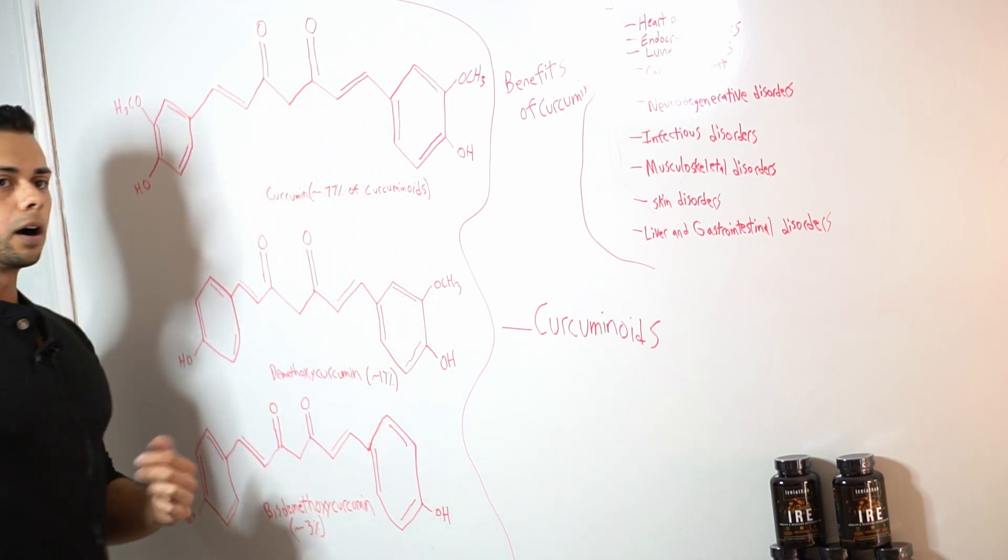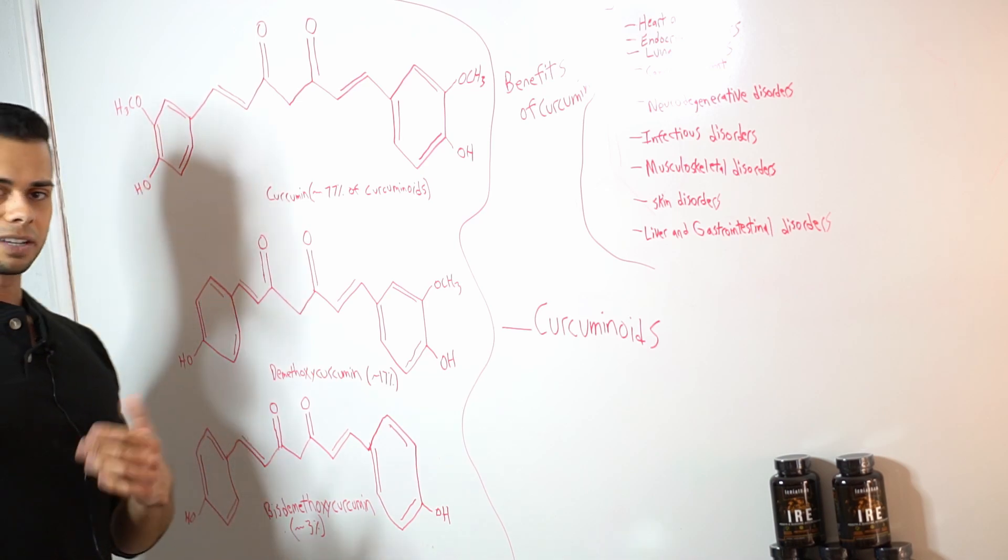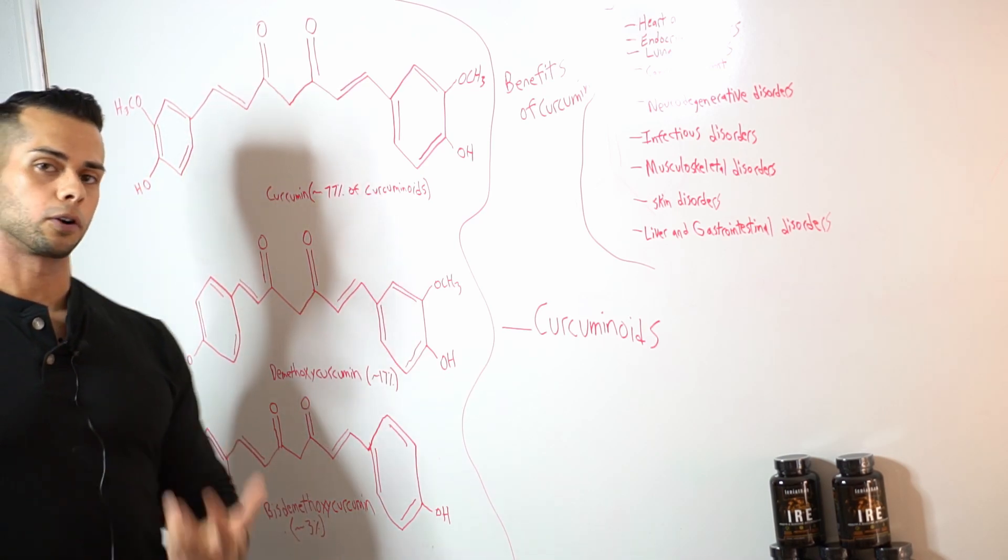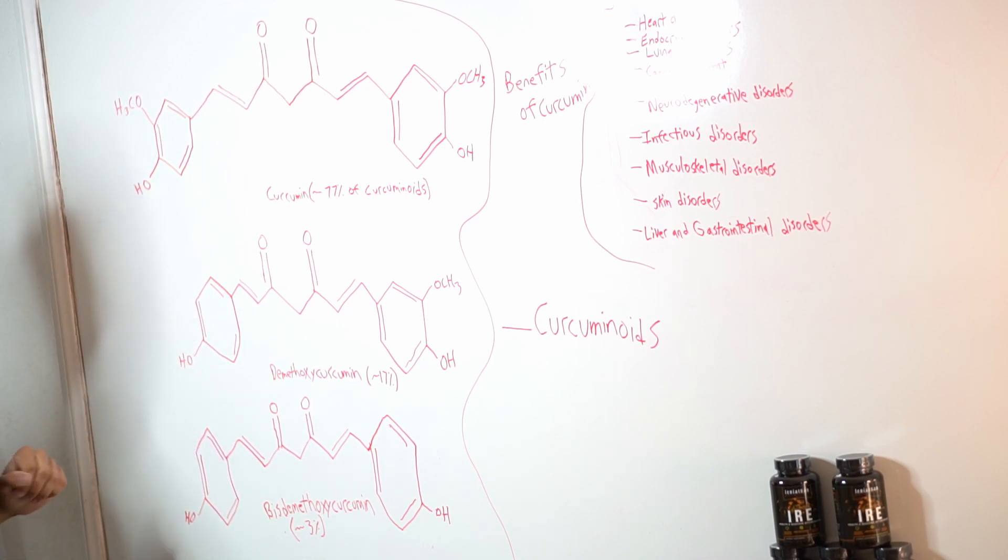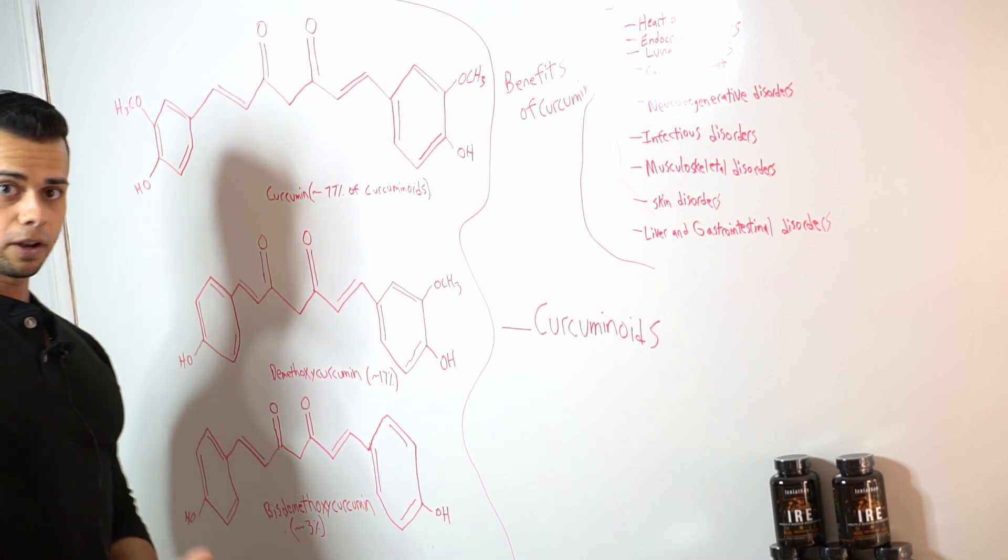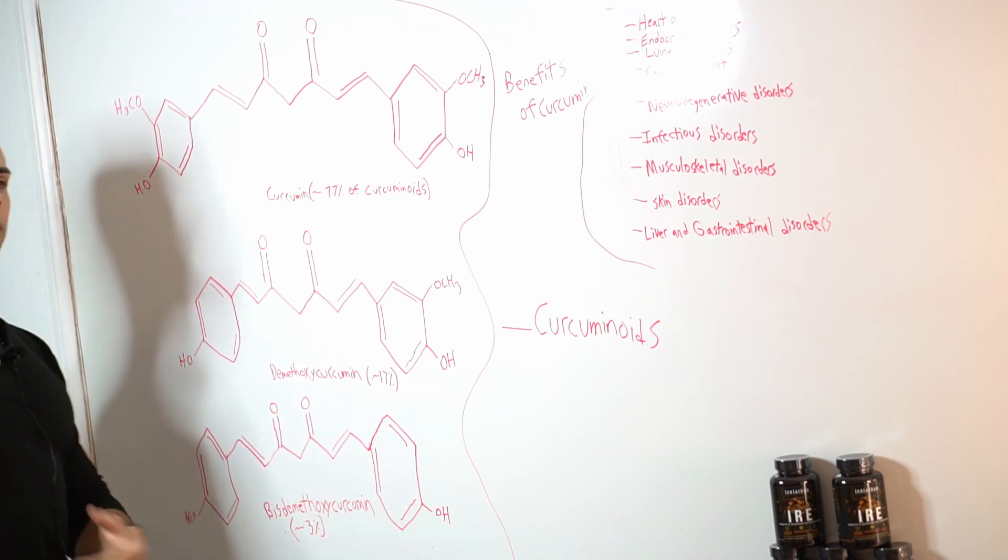The next one is demethoxycurcumin which composes of about 17% of the total amount of curcuminoids. The difference in the structures here is that we can see one of these OCH3 groups known as a methoxy group has been removed in this demethoxycurcumin hence its name.